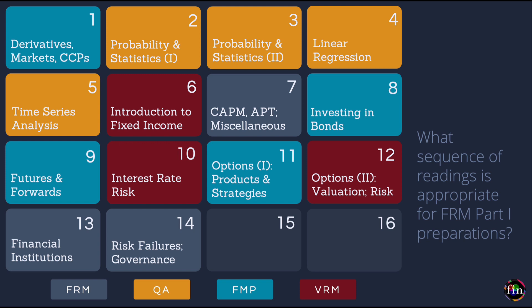Lesson 14 covers four chapters from Book 1: a chapter on enterprise risk management, a chapter on risk governance, and a couple of chapters on risk management failures — one on the great financial crisis and one on popular case studies of financial disasters.